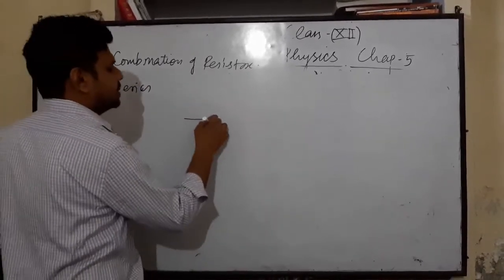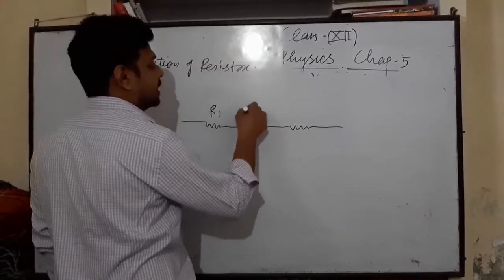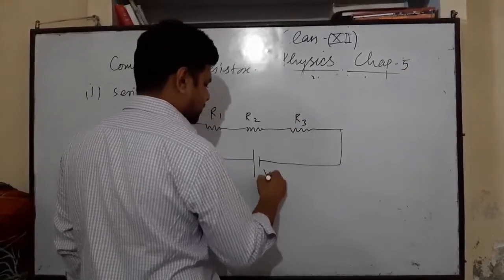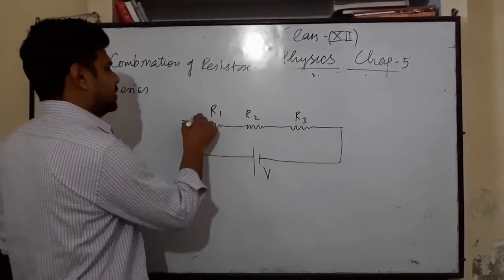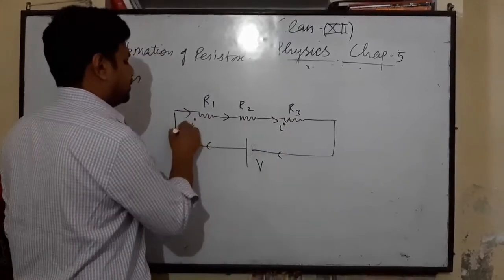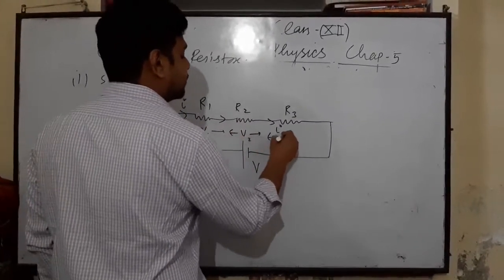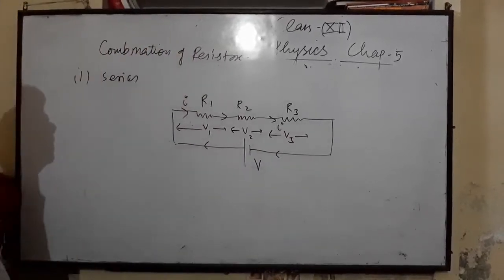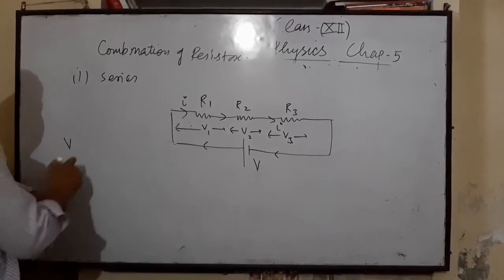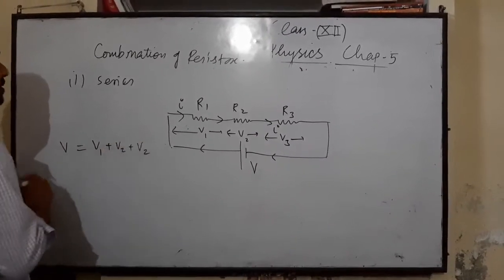In series combination, the resistors are joined end to end. Suppose we have R1, R2, and R3, and this whole combination is connected to a battery of potential difference V. In series combination, the value of current in each resistor will be the same, but the potential difference across each resistor will be different. The total applied potential difference equals the sum of the potential differences across each resistor.